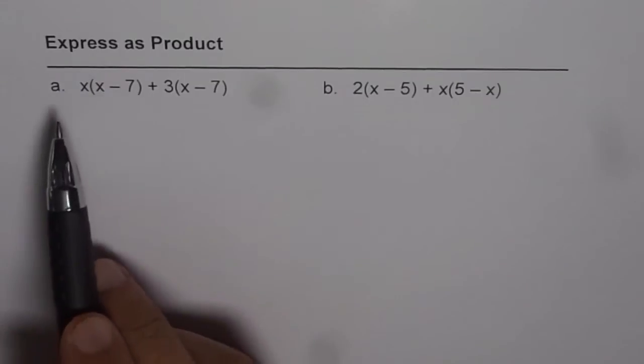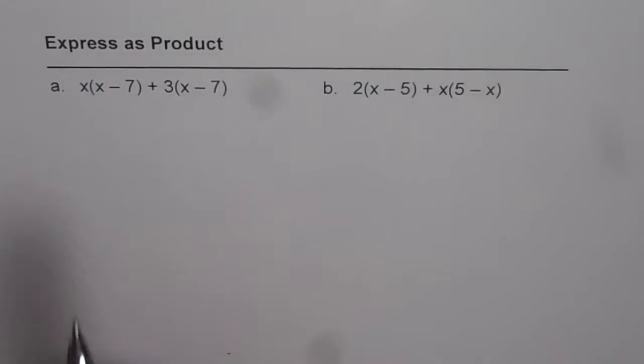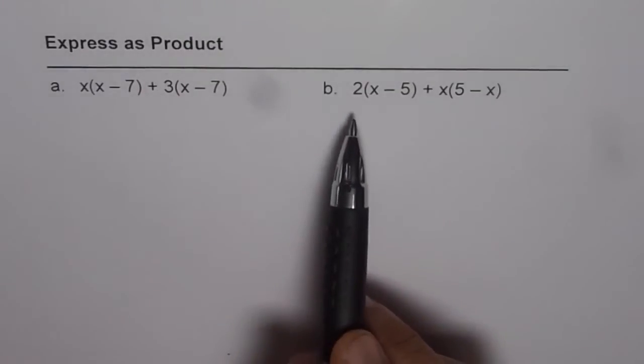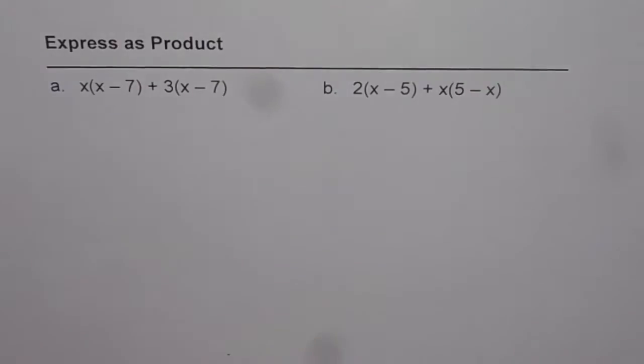Part A is x times x minus 7 plus 3 times x minus 7, and part B is 2 times x minus 5 plus x times 5 minus x. You need to express them as products.